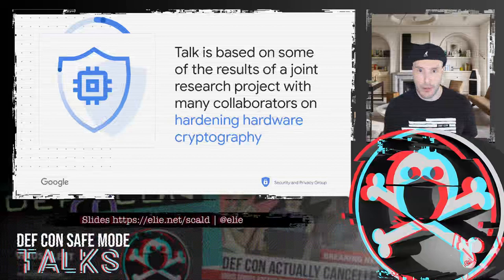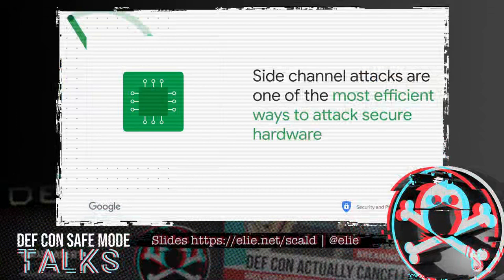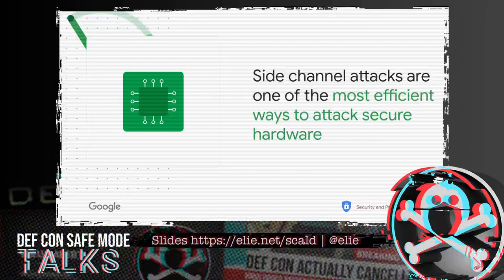Side-channel attack is one of the most efficient ways to attack secure hardware, because instead of targeting the algorithm — which is usually well understood and well scrutinized, let's say AES — it targets the implementation and the interplay with the given hardware. This is well less scrutinized because there are many of them, and it is way more subtle to understand how side effects of code affect a specific hardware and how that can be exploited by attackers.